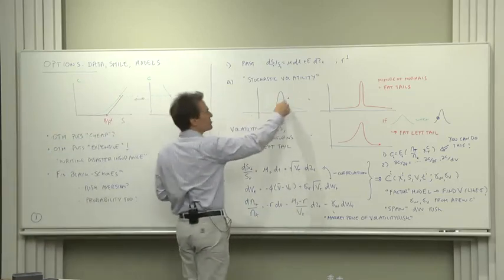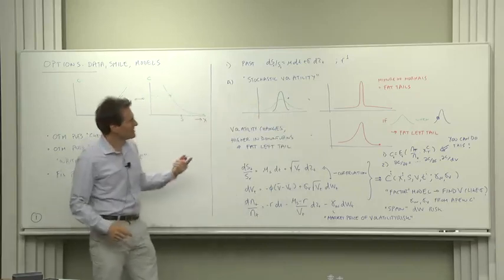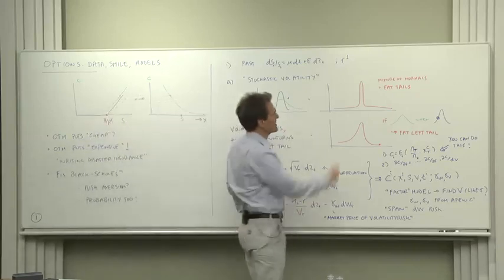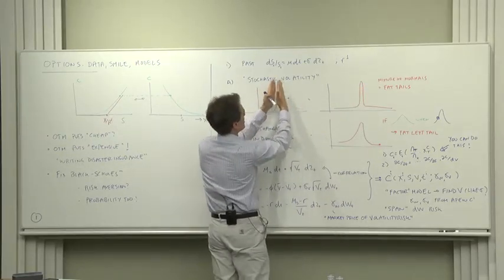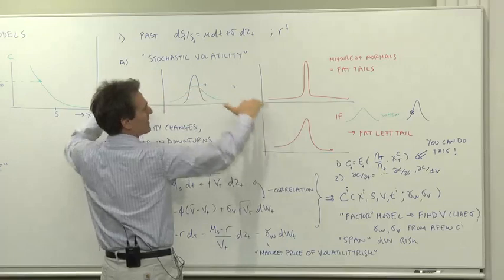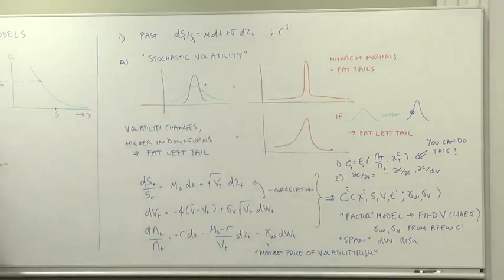So some days you're picking from this distribution. Some days you're picking from the green distribution. The sum of those two distributions is a distribution with, it's got the cathedral here, but then the wide part there. It gives you a fatter tail than a normal distribution can produce.